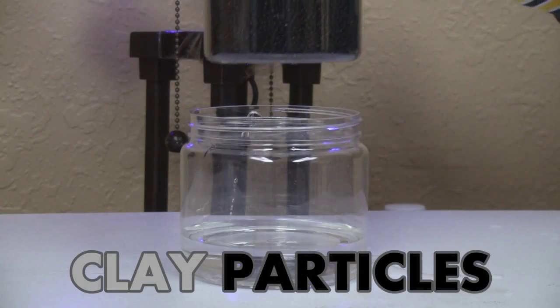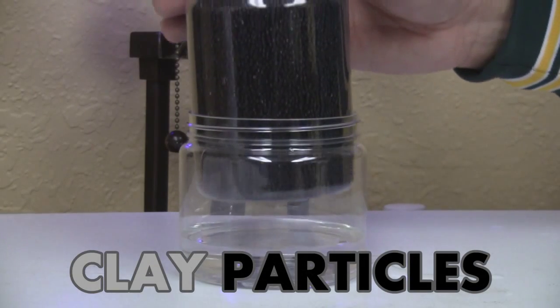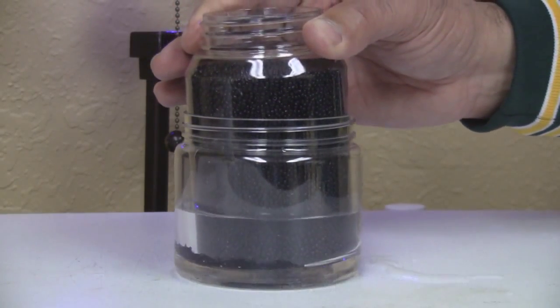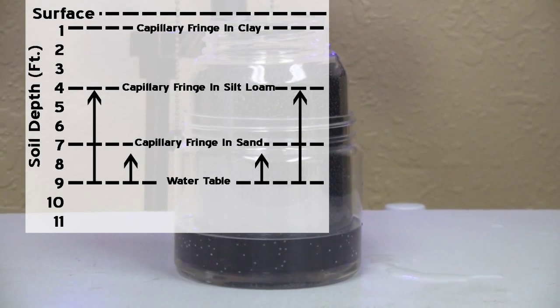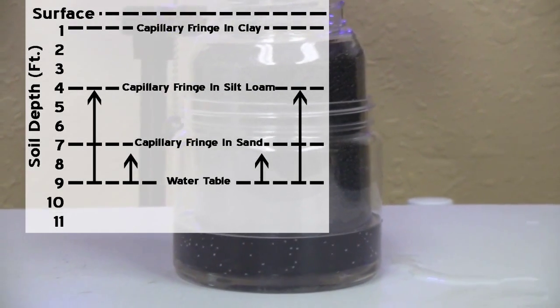In a clay soil, the capillary rise will be very slow versus a sandy soil, however with time it will rise very high above the groundwater level. As per study, it can rise as high as nine feet.